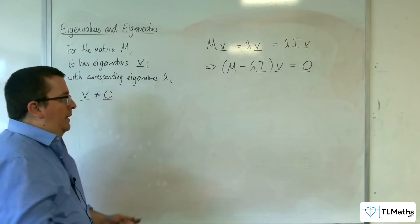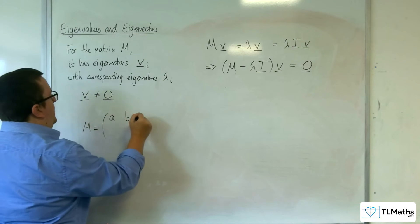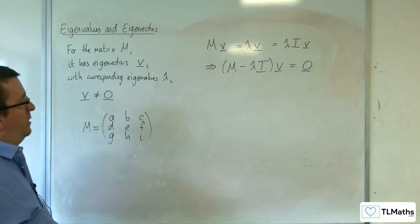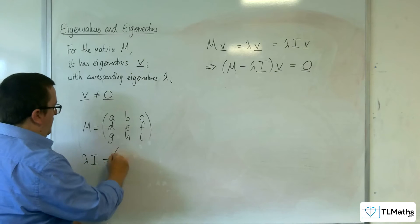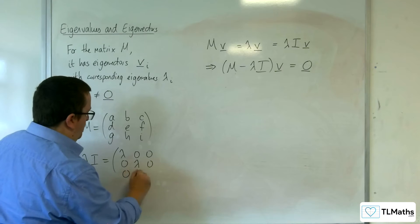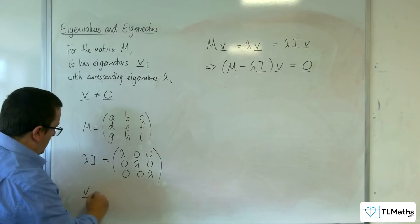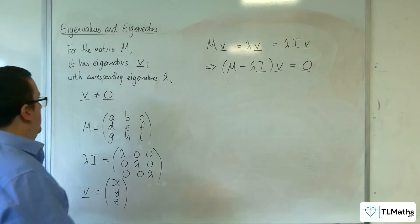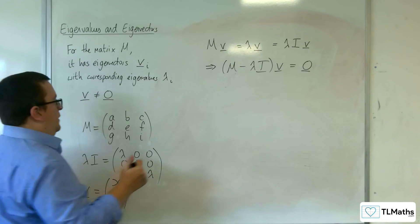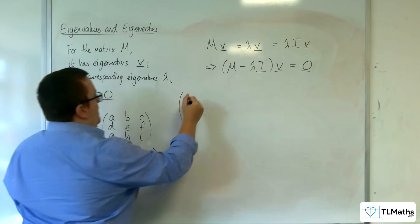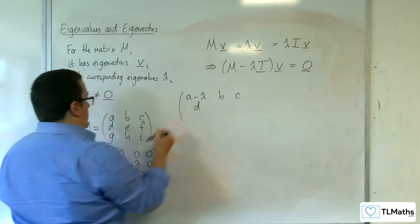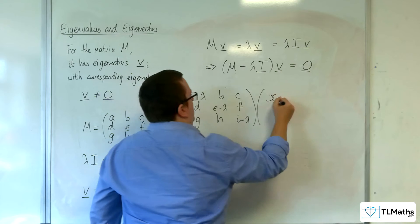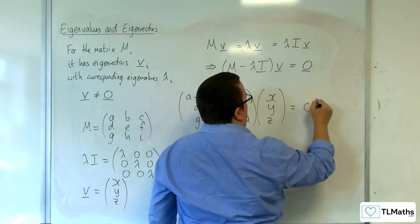Let's think about M as the matrix with entries A, B, C, D, E, F, G, H, I. Then lambda times I is just the diagonal matrix with lambda on the diagonal and zeros elsewhere. The eigenvector V is (x, y, z). So (M − λI) times (x, y, z) gives the matrix with entries (A−λ), B, C in the first row; D, (E−λ), F in the second row; G, H, (I−λ) in the third row, multiplied by (x, y, z), equal to the zero vector.